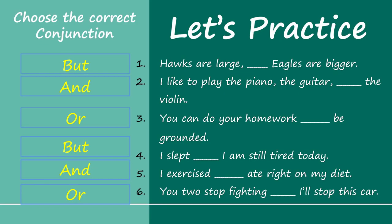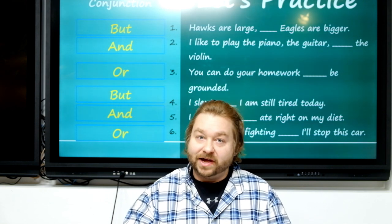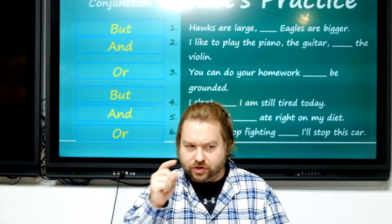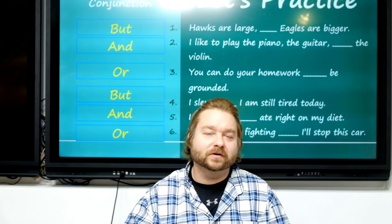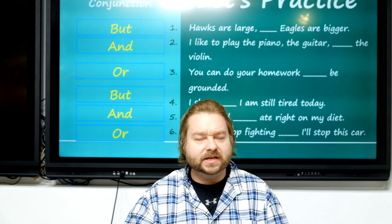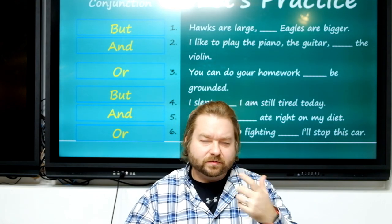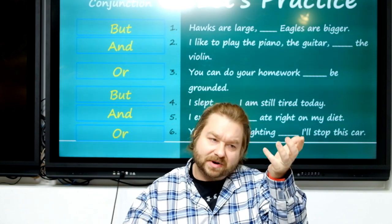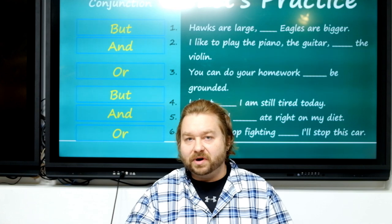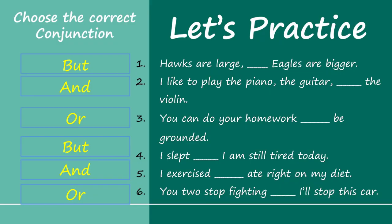Number three: 'You can do your homework — be grounded.' Sounds like mom, right? That's why it's 'or' — it's a choice. You can do this, or you're in trouble. Choices are easy to see. It gets a little trickier with 'and' and 'but,' but if we remember: positive and positive — these things exist — then positive and negative, 'and' and 'but' aren't so hard.